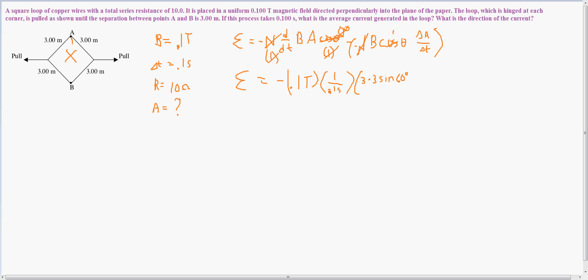which is 3 times 3 sine 60. That would be this line coming down here, minus the final area